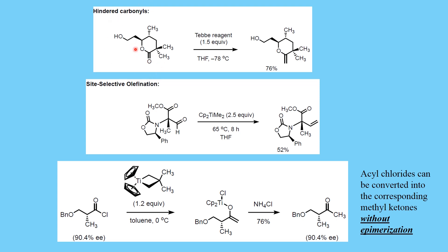A very interesting example: a hindered lactone reacted with Takai reagent gives rise to a product incorporating an Evans auxiliary — a topic covered in a separate video. When treating a substrate containing both an aldehyde and an ester with Petasis reagent, since aldehydes react much faster and have higher reactivity than esters, the reaction selectively takes place at the aldehyde position. The oxazolidinone moieties remain untouched — there is no reaction on those carbonyls.